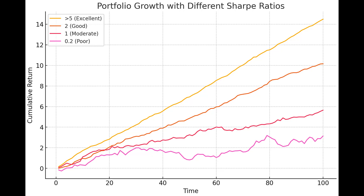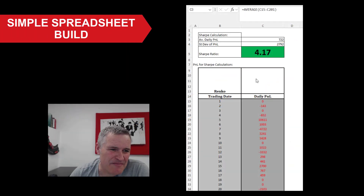In hedge fund terms, I would say they're looking for a Sharpe ratio greater than 2. I've seen them up to 20 — that's more like a money-printing machine, market-making or high-frequency algorithmic trading. But anything between 2 and 3.5 is absolutely fabulous. I try to aim my strategies to be greater than 2; less than that I'm not so interested — I don't want those big swings in the P&L. You can see straight away how you can start thinking about using the Sharpe ratio in your trading.